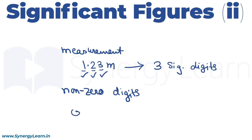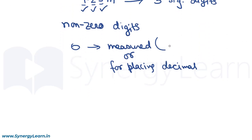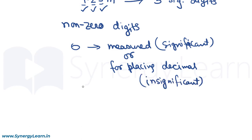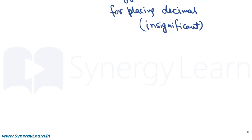Zeros either come from measurement or they come to place the decimal. Out of the two, when the zero has come from measurement it is significant, but when it is used for placing the decimal it is insignificant. By looking at a measurement we can identify whether a zero has come from measurement or just for placing the decimal.